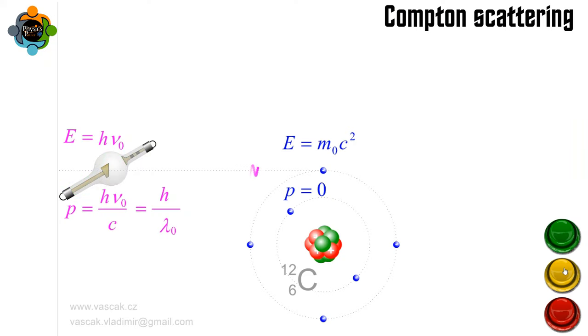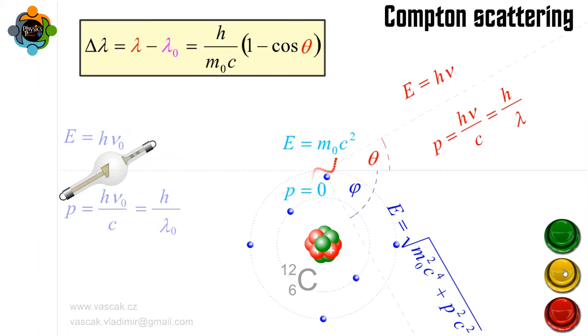Did you know that the amount of energy lost by the photon in Compton scattering is directly proportional to the energy of the incident photon? This relationship is a key factor in determining the wavelength shift of the scattered photon.